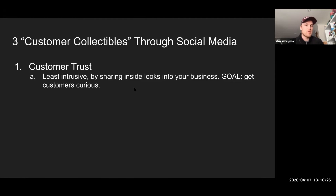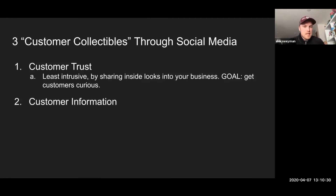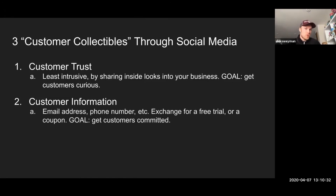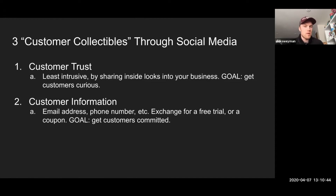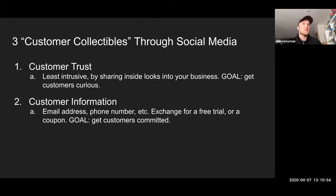In the next few slides I'll show some strategies for collecting trust. The second collectible is customer information — this is a little more intrusive, because instead of just having customers view your posts and believe in what you're doing, now you're gathering information from them: their email address, their phone number. Most commonly these are collected in exchange for things like a free trial or some sort of coupon.